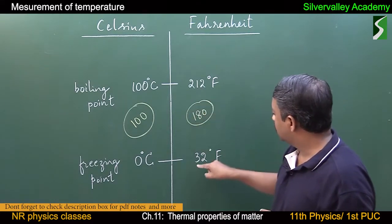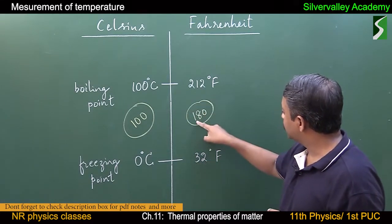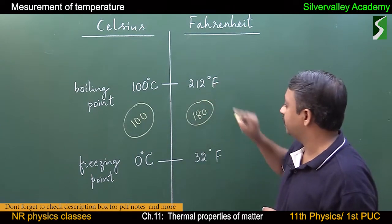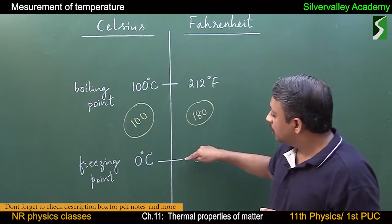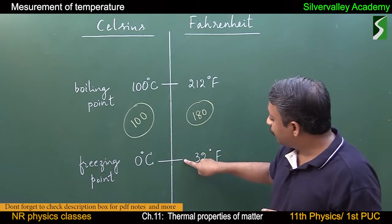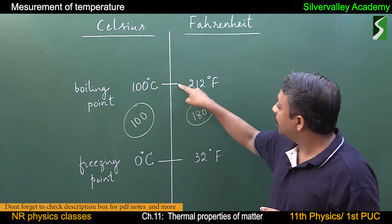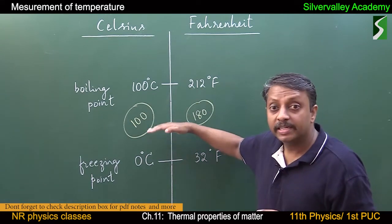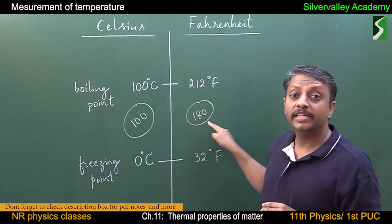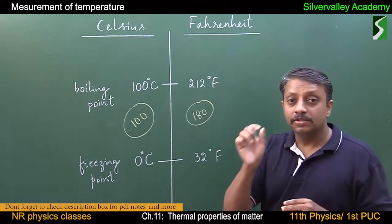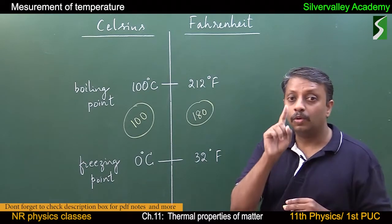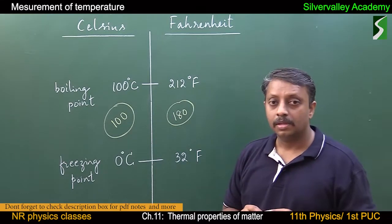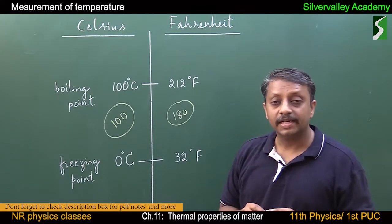In the Fahrenheit scale, there are 180 divisions between freezing point and boiling point. 32 plus 180 is 212 degrees Fahrenheit. So the range from freezing point to boiling point is equally divided into 180 divisions, and each division is equal to 1 degree Fahrenheit.